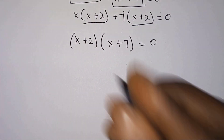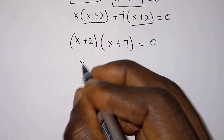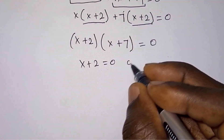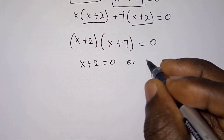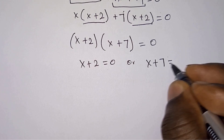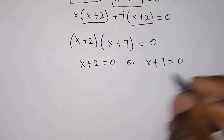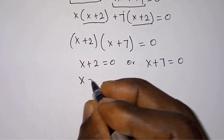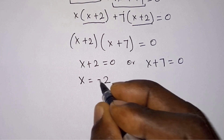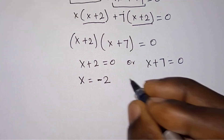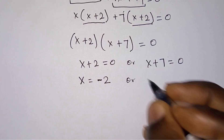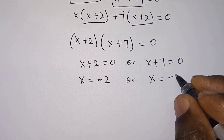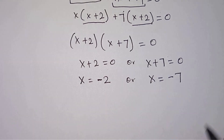We have x plus 2 in common, so factoring gives x plus 2 times x plus 7 equals zero. So x plus 2 equals zero, giving x equals negative 2, or x plus 7 equals zero, giving x equals negative 7.